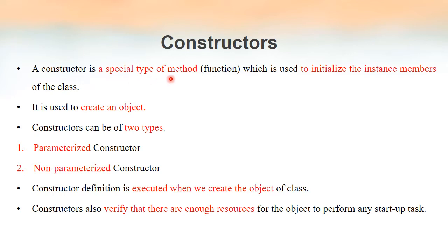A constructor can be defined as a special type of method. A constructor is actually a method or a function, but it is used only to initialize the instance members of the class. It is actually a method, but it has got a specific purpose. A method that is used to initialize the instance members of a class is known as a constructor, and it is used to create objects.